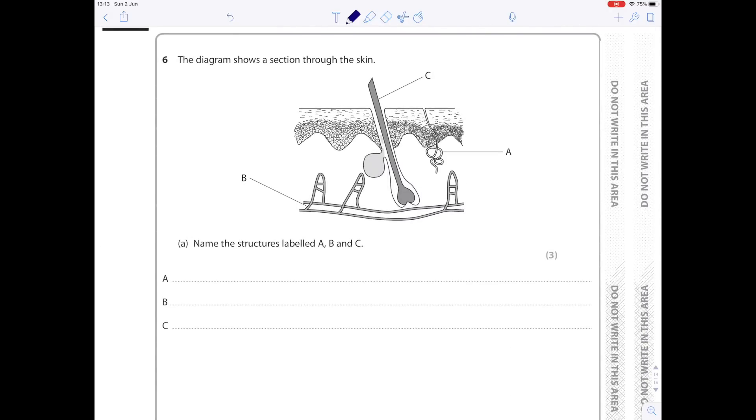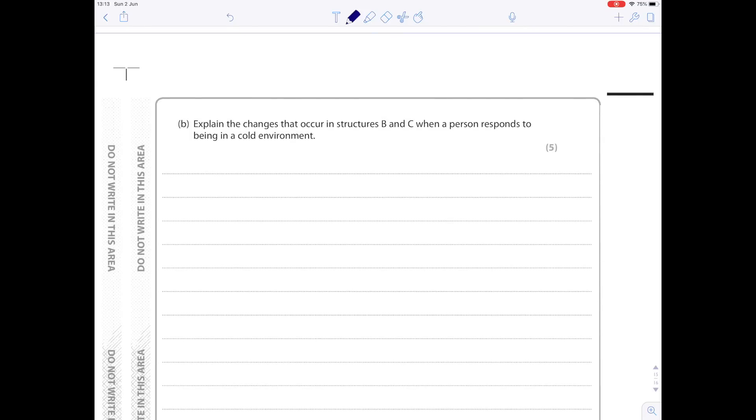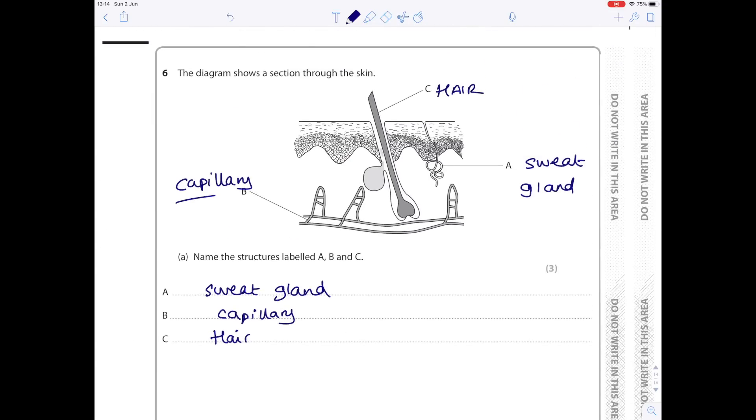The diagram shows a section through the skin. Name the structures labeled A, B and C. This is a hair. This is a sweat gland and here are the capillaries. So A is a sweat gland, so we're looking at thermoregulation here, so controlling body temperature. B is a capillary and C is a hair. Explain the changes that occur at structures B and C when a person responds to being in a cold environment. So B and C are capillaries and hairs. So remember with capillaries if we're looking at cold we're trying to conserve heat so we have vasoconstriction, and with the hairs they stand up on end.